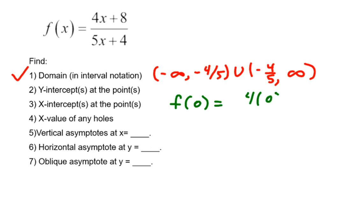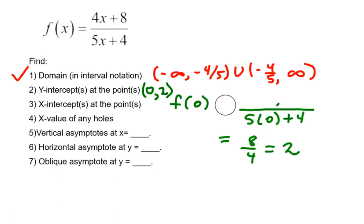I'm just going to plug in 0 wherever x is and simplify. So I get y equals 2. So now my y-intercept at x equals 0 and y equals 2. And I am done with part 2.